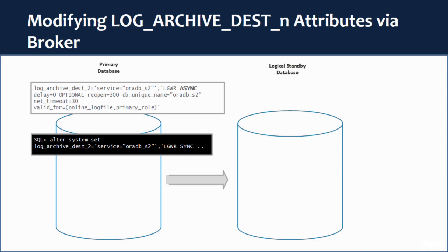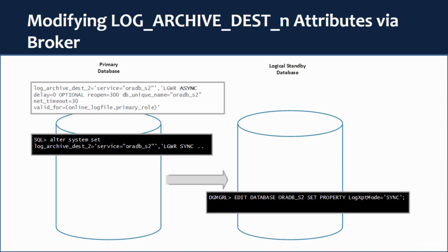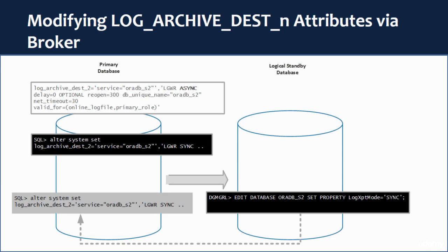If you are using the broker, you invoke the DGMGRL utility and connect to any database in your Data Guard configuration — not necessarily the primary. Then you change the property LogXptMode of the standby database by issuing: EDIT DATABASE oradb_s2 SET PROPERTY LogXptMode = SYNC. The broker in the background will communicate with the primary database and modify log archive destination 2 to apply the required changes. You can observe the ALTER SYSTEM statement run by the broker in the alert log of the primary database. Although you modify the property of the standby database, the change is actually applied on the primary database — it all happens in the background.